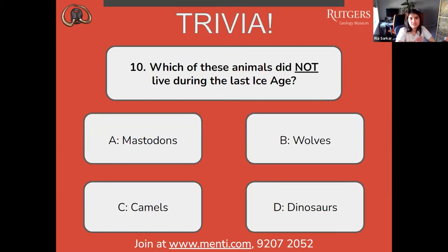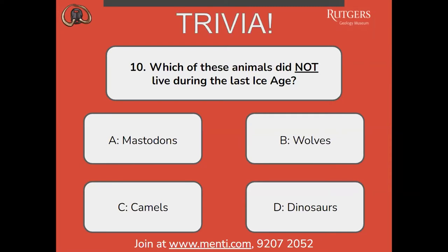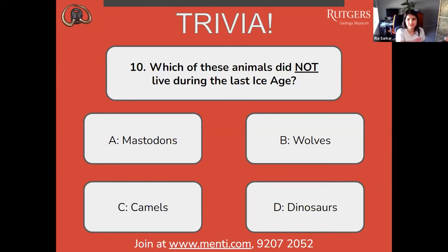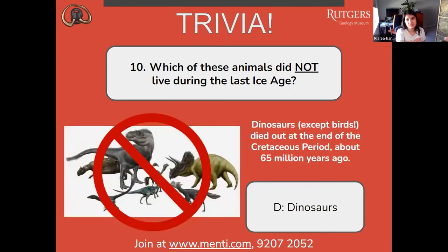Number ten: which of these animals did NOT live during the last ice age? A, mastodons; B, wolves; C, camels; or D, dinosaurs. The correct answer is D, dinosaurs — except birds — died out at the end of the Cretaceous period about 66 million years ago. So no dinosaurs during the last ice age. I know many of you may have seen the ice age movies with baby T. rexes hanging out with the mastodon, but that did not happen.